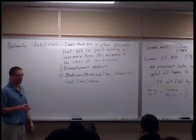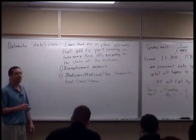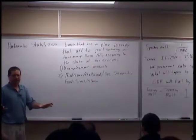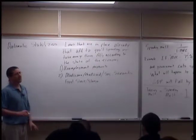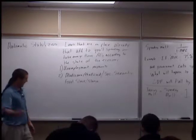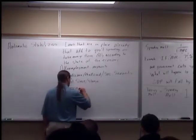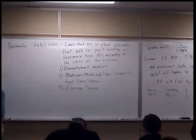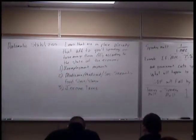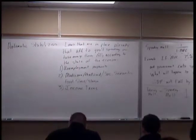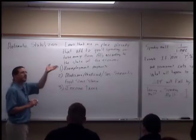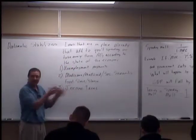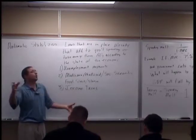But automatic stabilizers also work to slow the economy down. Imagine all of you in this room got a job next week making a hundred thousand dollars a year. What's the one thing that's going to hold you back from spending all of that? Income taxes. The fact that you'd jump into a much higher tax bracket — those higher tax rates are going to stop you from taking every penny you're making and pumping it into the economy.